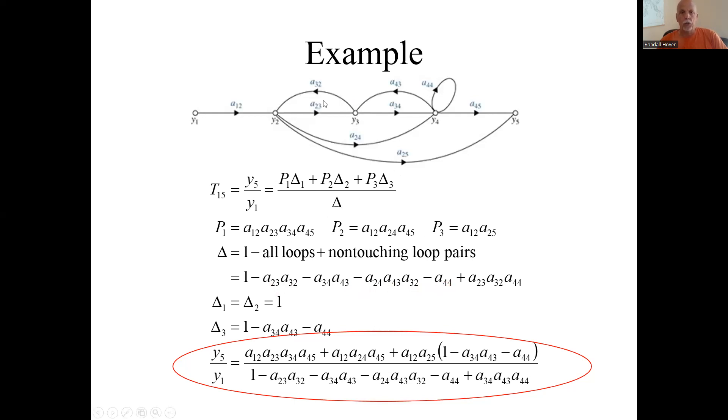And we had all those loop gains. I'm not going to go through all that: A23, A32, et cetera. And then you add the non-touching loop pair gains. There was only one pair, two loops but one pair. The non-touching loops was this guy, A44, and this guy, A23, A32. You multiply all those gains together. That was the only non-touching pair of loops. So this is the delta that goes on the bottom.